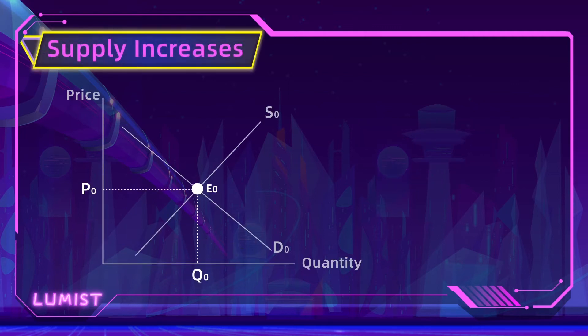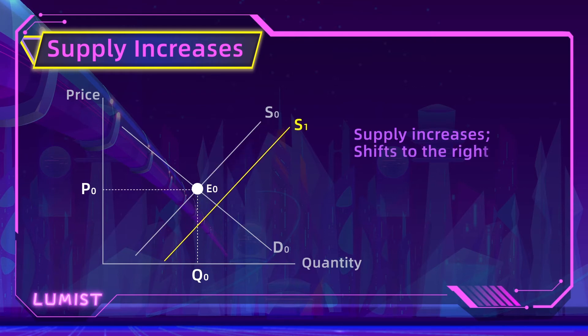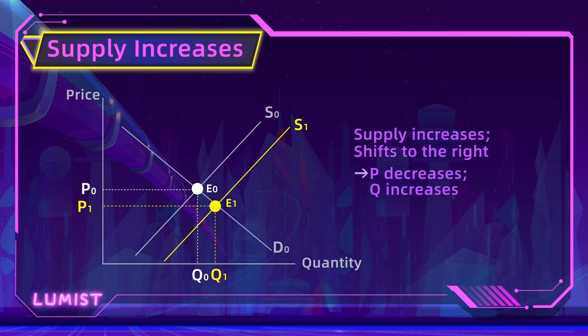Now let's see how the supply curve will change the market equilibrium. If producers now have better technology or lower input prices, they're going to increase their quantity supplied at any given price, so the supply curve shifts towards the right. We get a new equilibrium point at E1 where the corresponding price P1 is now lower than before, while Q1 is now higher than Q0.